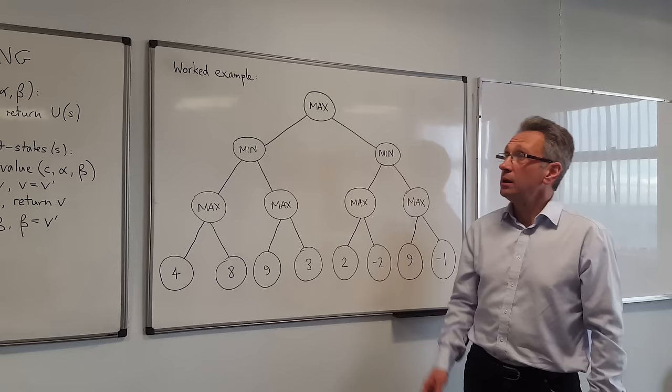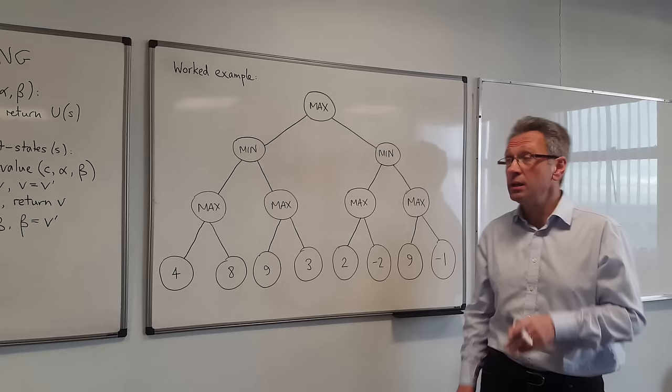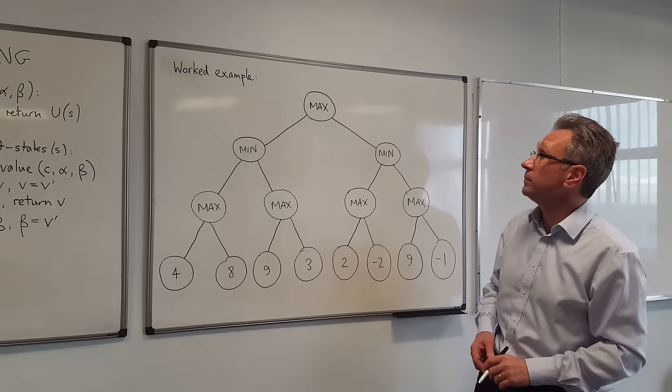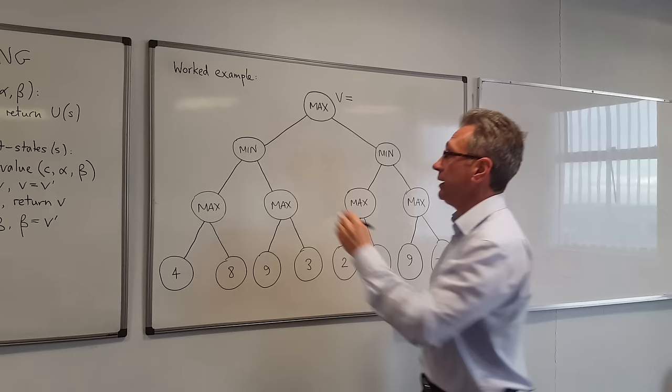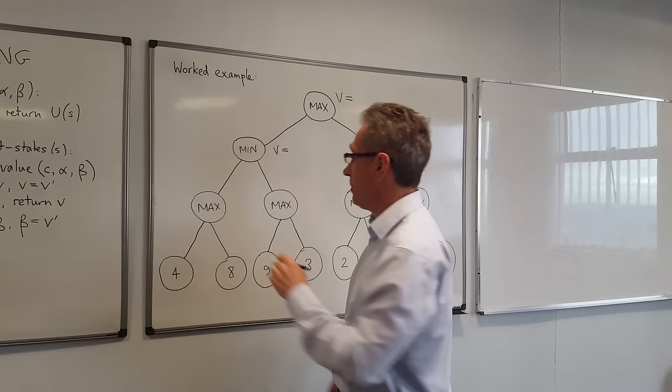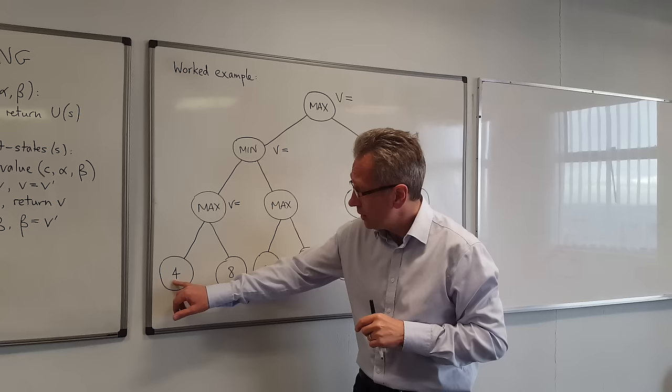We're now going to go through a worked example, but before I do that, I'm going to show you how the Minimax algorithm works without the alpha-beta pruning in place, so that you can see how alpha-beta pruning improves the search. We start at the top level, we call MaxValue here, then we call MinValue, then we call MaxValue again. Because we've got two terminal nodes here — 4 and 8 — we can calculate this MaxValue. It's the maximum of these two nodes, so that's 8.